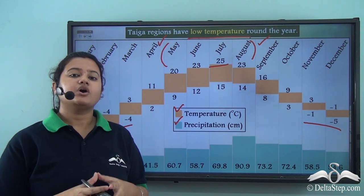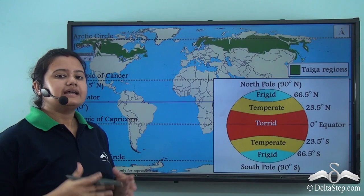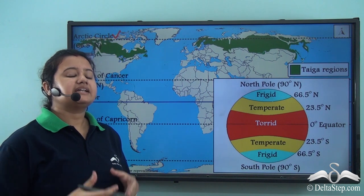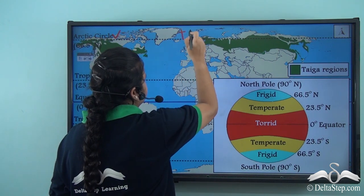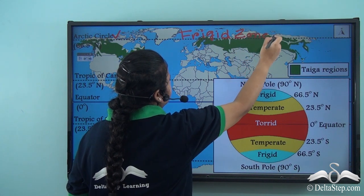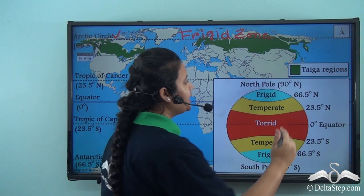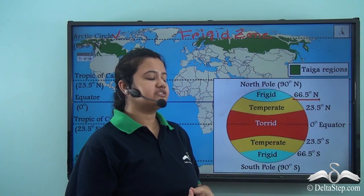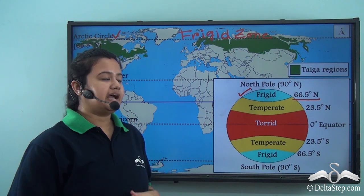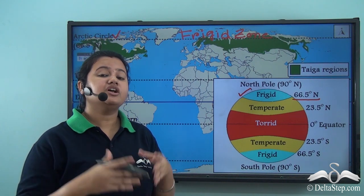There are three reasons why the mean annual temperature of this biome is very low. First, the Taiga region encompasses the Arctic Circle and lies very close to the frigid zone. Referring to the heat zones of the earth, the region beyond the Arctic Circle — at 66.5 degrees north — lies the frigid zone. Therefore, the Taiga region experiences freezing cold temperatures throughout the year.